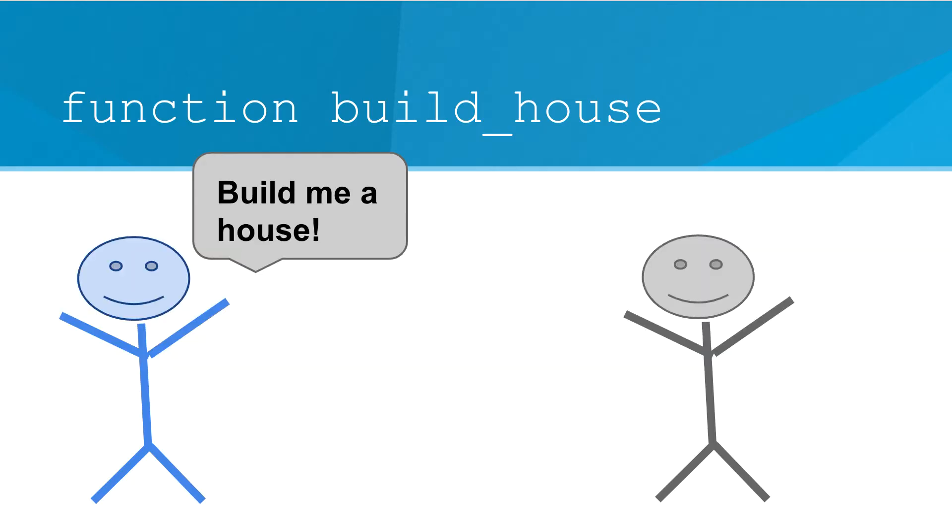So let's try this again, but with parameters. So you once again, tell your friend you want to build a house.